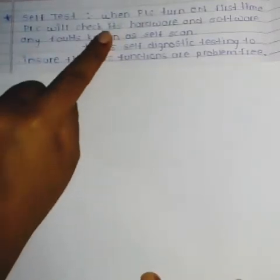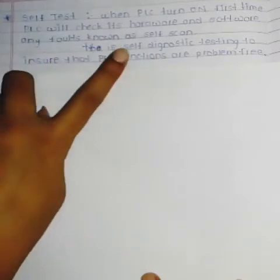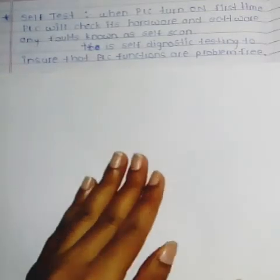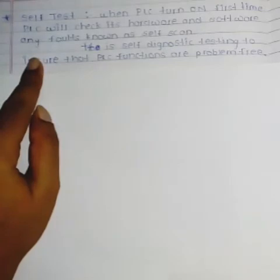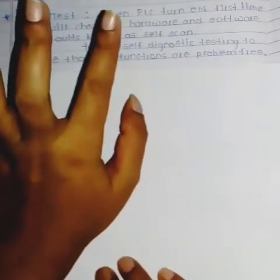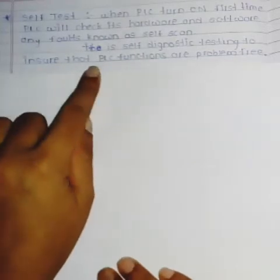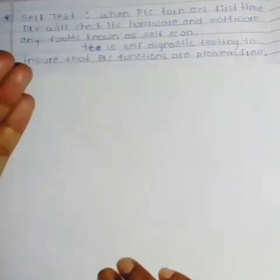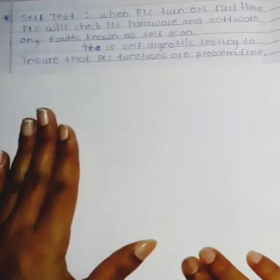The first stage is the self-test. When the PLC turns on for the first time, the PLC will check its hardware and software for any faults — this is known as a self-scan. This is self-diagnostic testing to ensure that the PLC functions are problem-free.